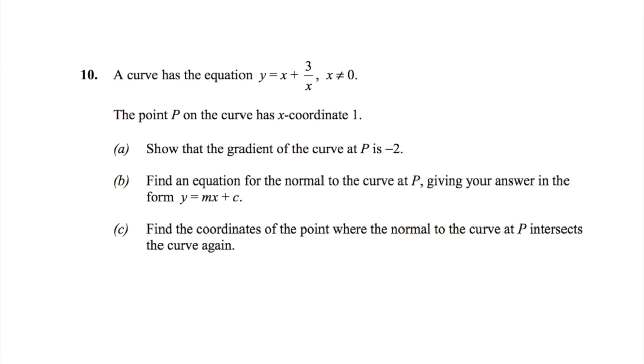To find the gradient at point P, we need to differentiate y equals x plus 3 over x. So the first thing I'm going to do is rewrite the equation as y equals x plus 3x raised to the power of minus 1.